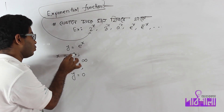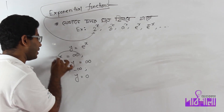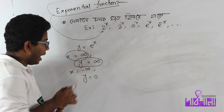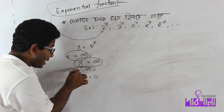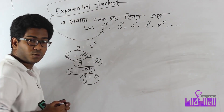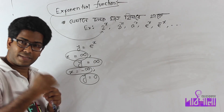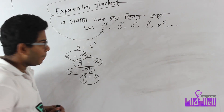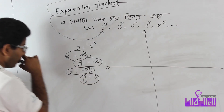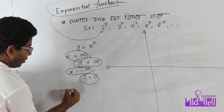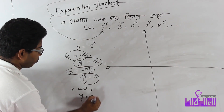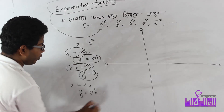So, if you want to go down, y is equal to 0. And if you want to go down, y is equal to 0. So 0 is equal to 0. If you want to go down, x is equal to 0, then 0 is equal to 1.